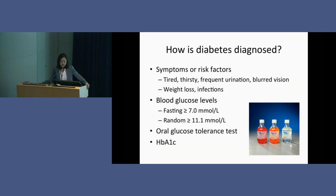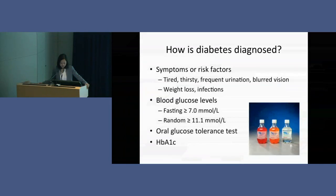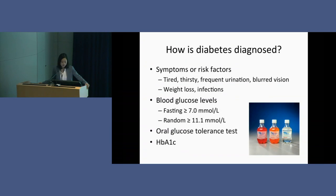How do we diagnose diabetes? People may present with symptoms like feeling tired or thirsty, going to pass urine frequently, having blurred vision, weight loss, or more infections than usual. Sometimes people have no symptoms and a blood glucose level is tested — either a fasting or random level above diagnostic targets is confirmatory. Sometimes an oral glucose tolerance test is ordered; in Australia we use a 75-gram glucose load, roughly equivalent to five slices of bread. If your glucose rises significantly after drinking that, diabetes may be diagnosed. There's also a blood test called an HbA1c which, while not suitable for everyone, your doctor might also order.